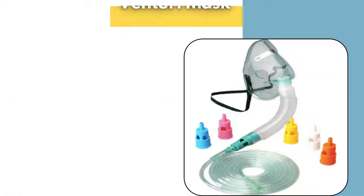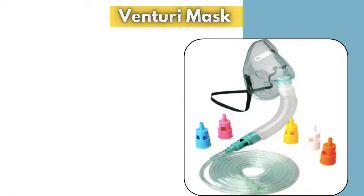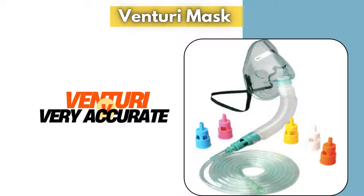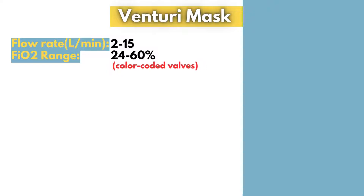The Venturi mask stands out because it delivers a fixed fraction of inspired oxygen. A useful way to remember this is that the letter V in Venturi stands for very accurate oxygen delivery. This precision is achieved through a built-in valve system that controls how much room air is mixed with the incoming oxygen, ensuring a specific fraction of inspired oxygen at a given flow rate. The fraction of inspired oxygen delivered depends on the color-coded Venturi adapters.